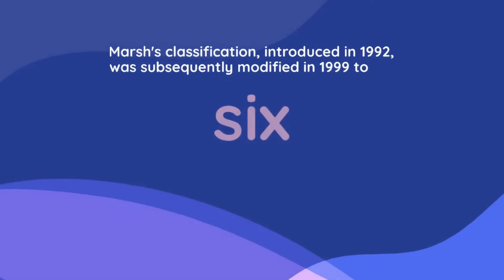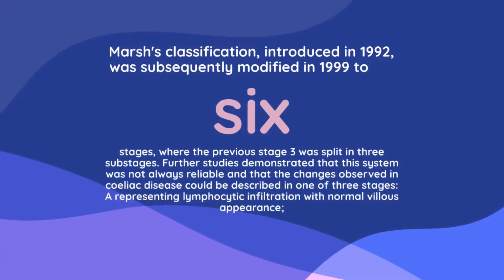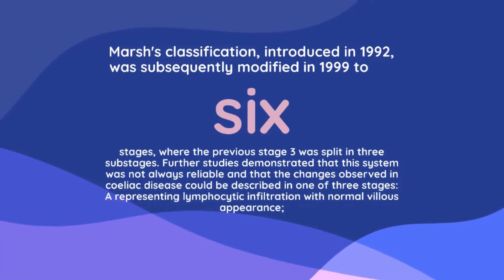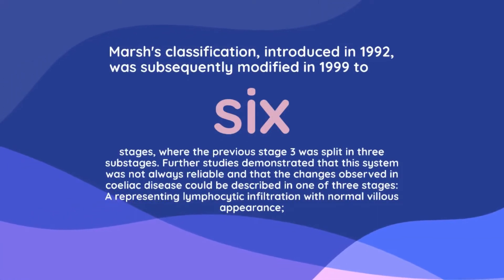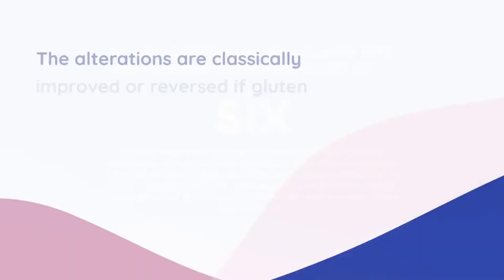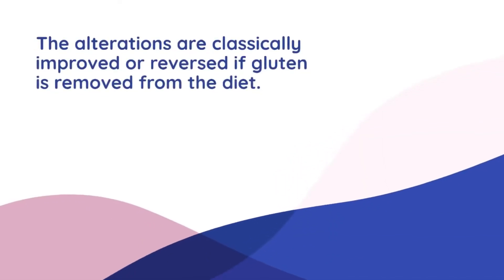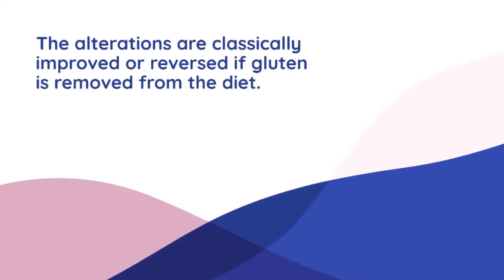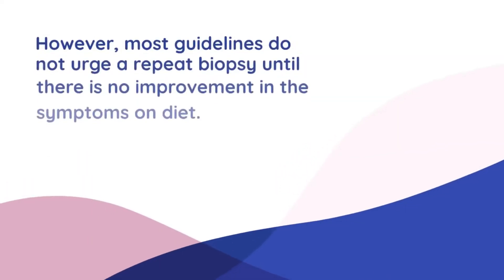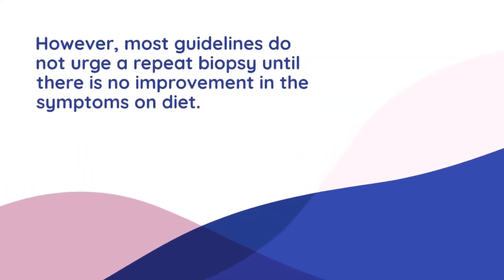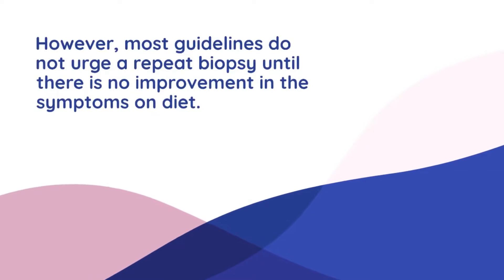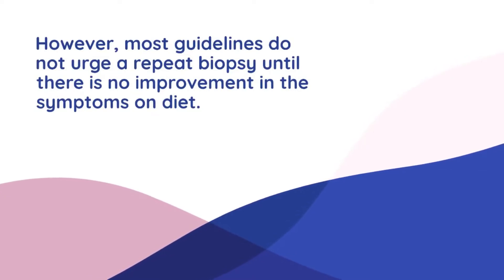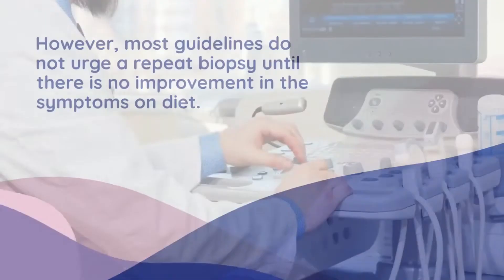MARSH's classification, introduced in 1992, was subsequently modified in 1999 to 6 stages, where the previous stage 3 was split into 3 substages. The alterations are classically improved or reversed if gluten is removed from the diet. However, most guidelines do not urge a repeat biopsy until there is no improvement in the symptoms on diet.